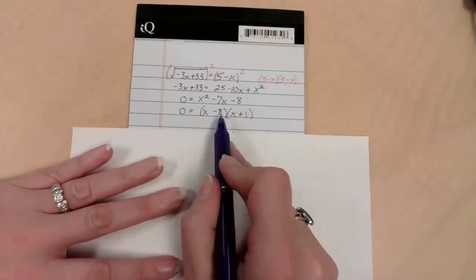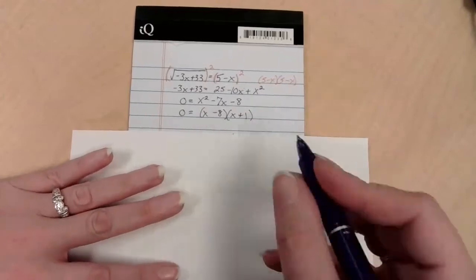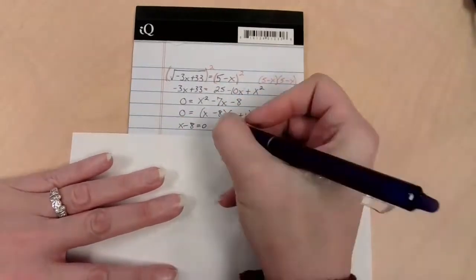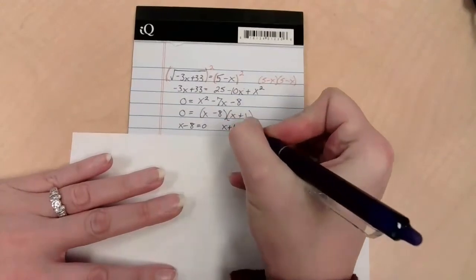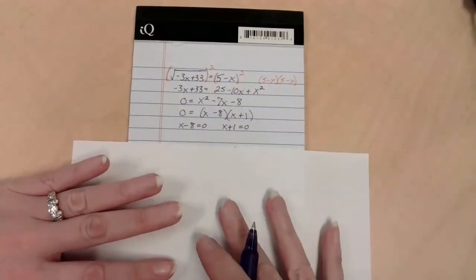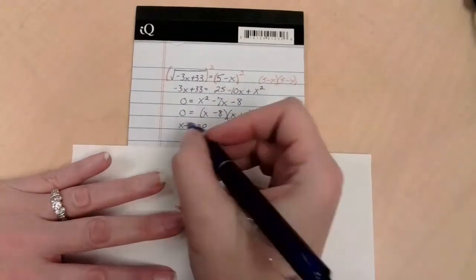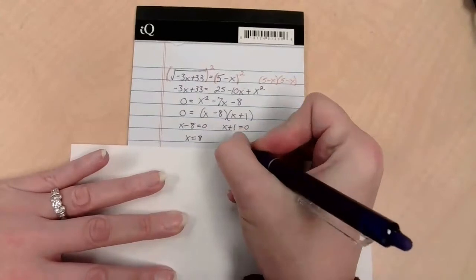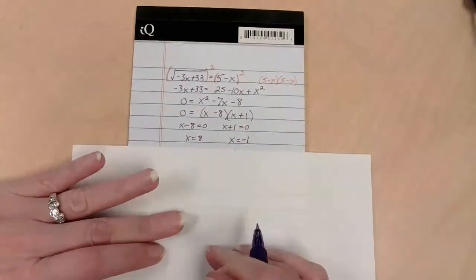What do I do from here? Well, if this factor times this factor equals 0, that means that either x minus 8 has to equal 0, or x plus 1 has to equal 0, or both of them could equal 0. So if we just do some little bit of adding here, this is going to be x equals 8, and we'll subtract here, this is going to be x equals negative 1. Great.